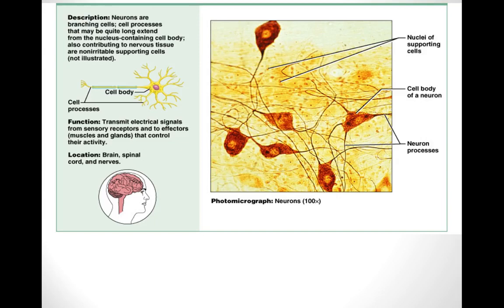Looking at another diagram: you can see the neuron's cell body, the dendrites as long extensions, and one long extension from the back which is the axon. That concludes the lecture on connective tissue. Please keep an eye out for the quiz on connective tissue, which will be posted soon.